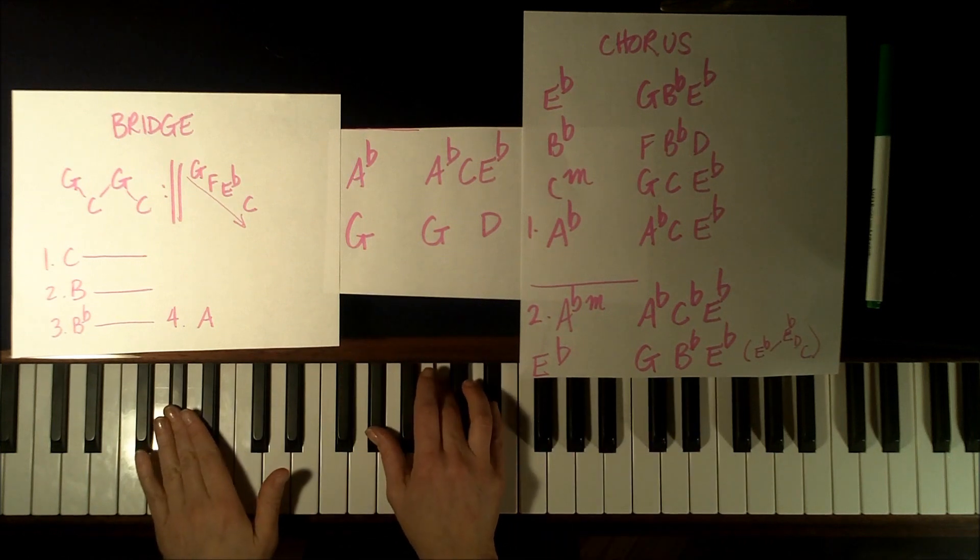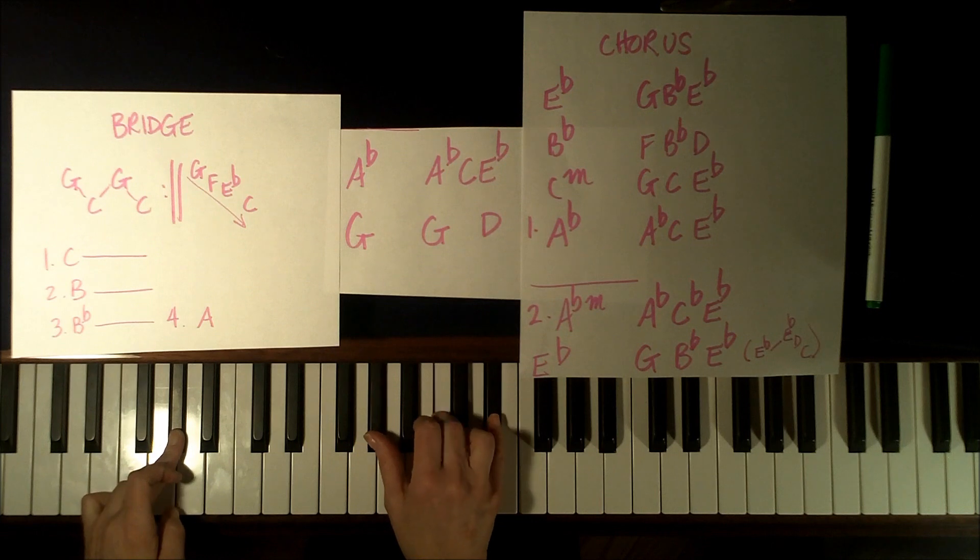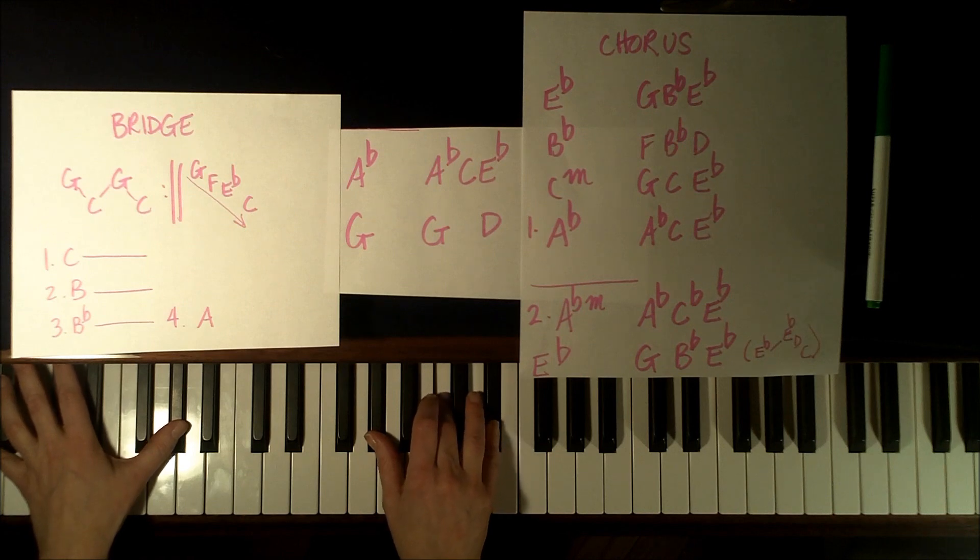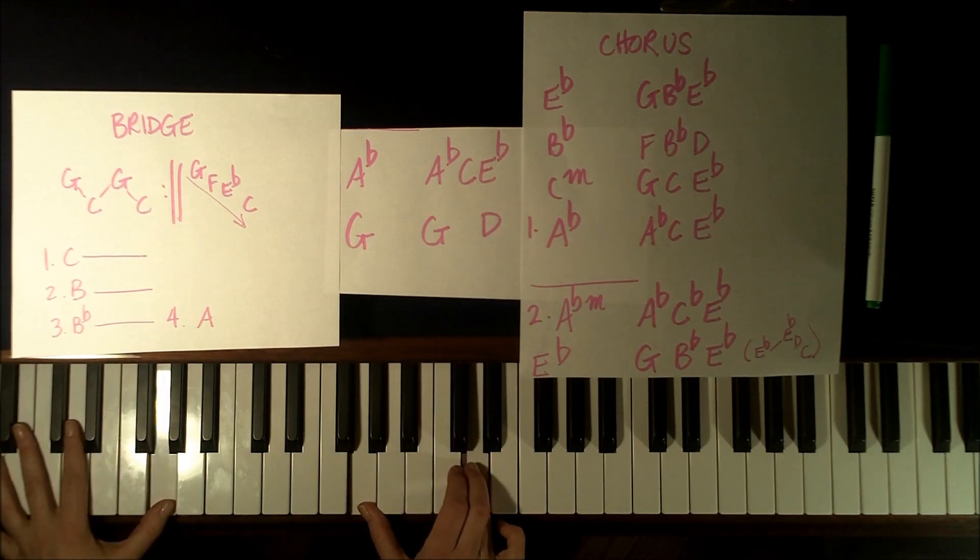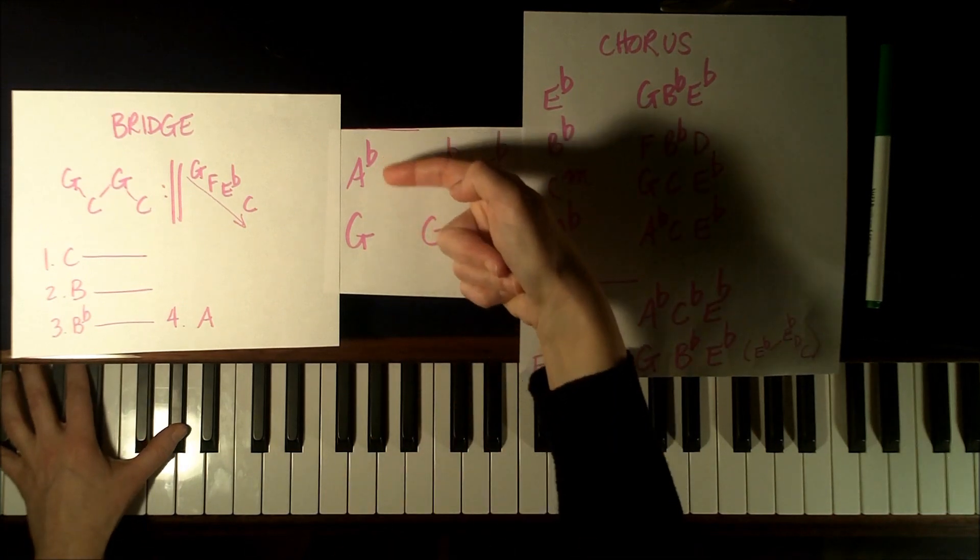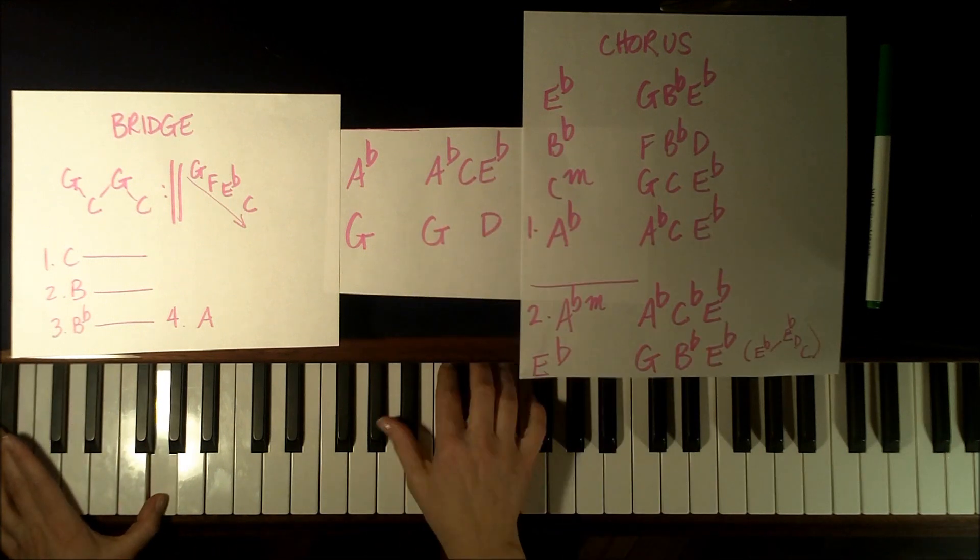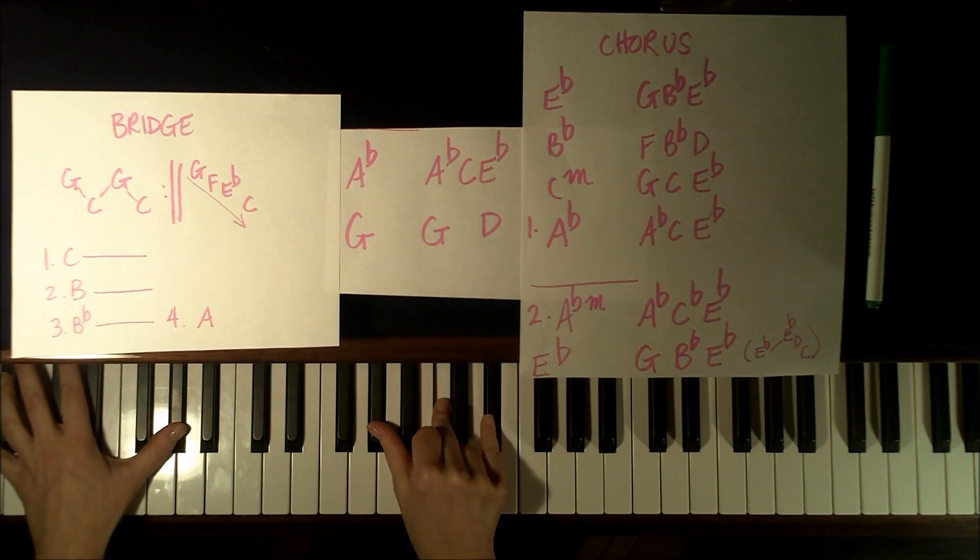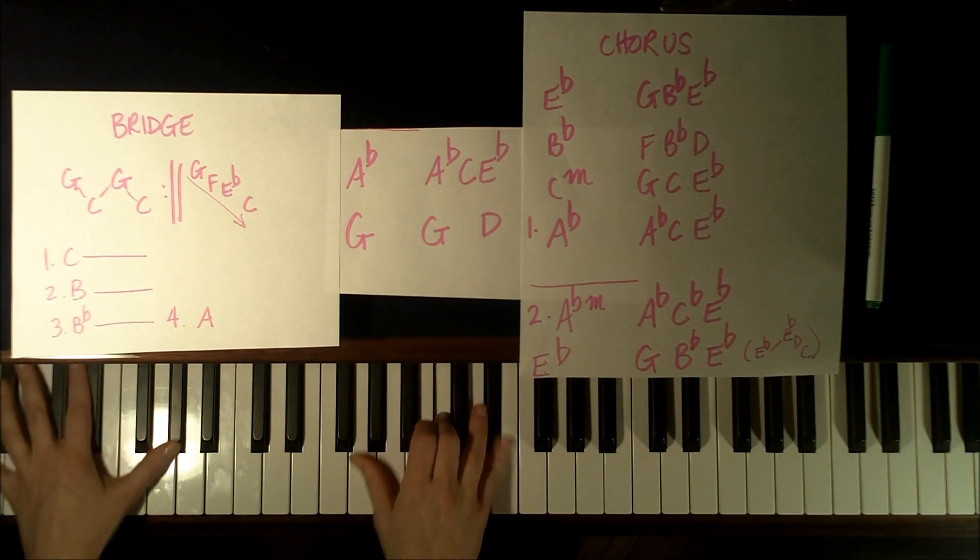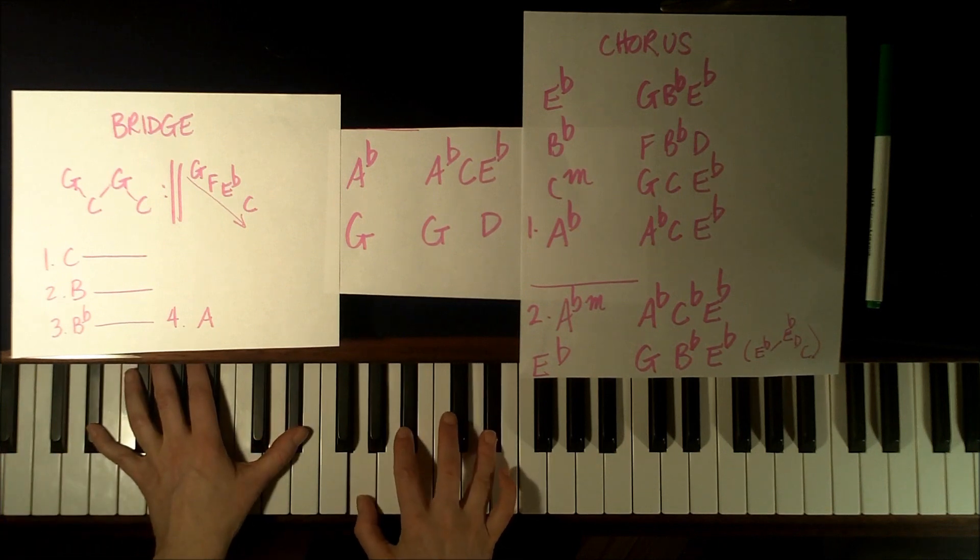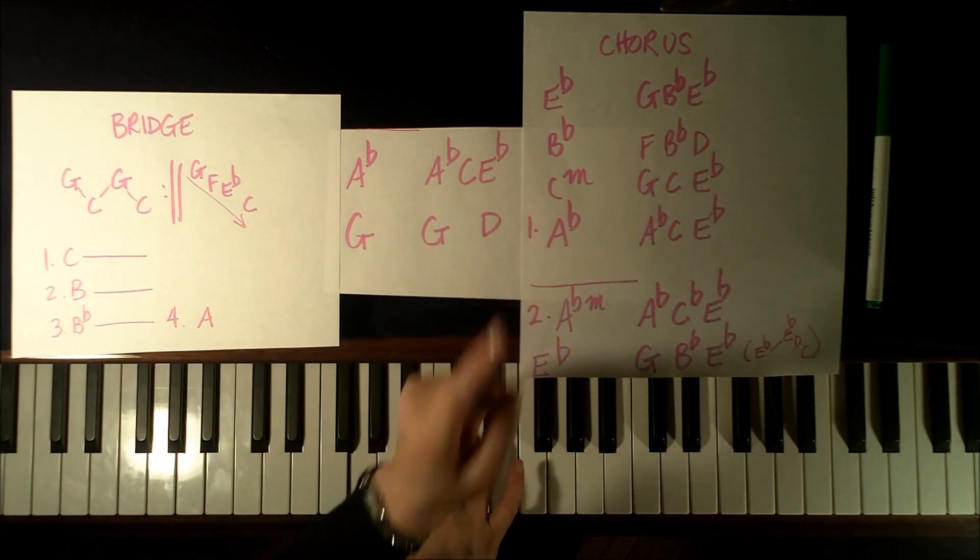Then we have chords, which is Ab in the left with Ab, C, and Eb. And you can make this really big by adding an octave, because it's really powerful in this section. And so my left hand does Ab octaves, and then G octaves. And in the right hand, Ab major: Ab, C, Eb. And then it goes right back to the chorus again.